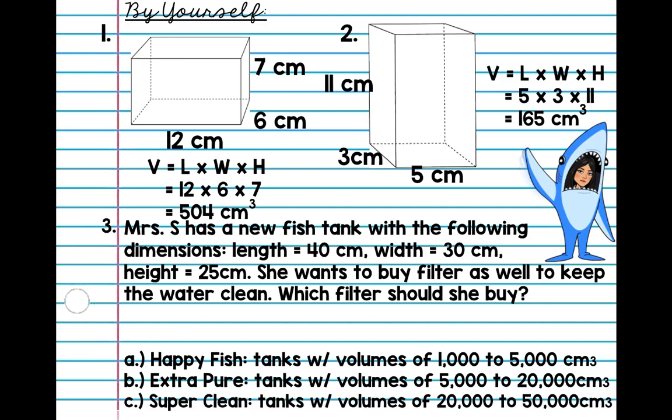So, these are my three options. I have Happy Fish. It fills tanks with 1,000 to 5,000 centimeters cubed. Extra pure, which is 5,000 to 20,000 centimeters cubed. And super clean, which is 20,000 to 50,000 centimeters cubed.